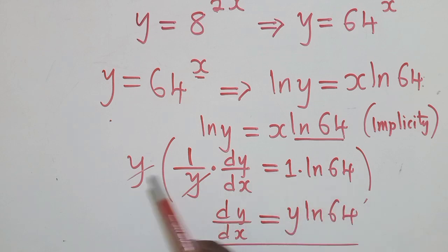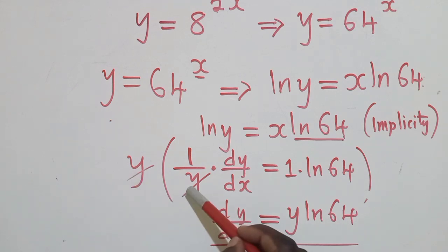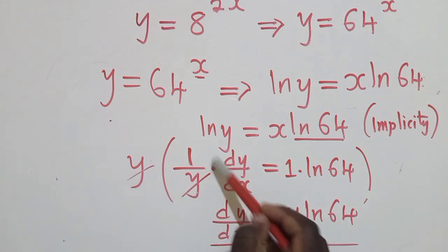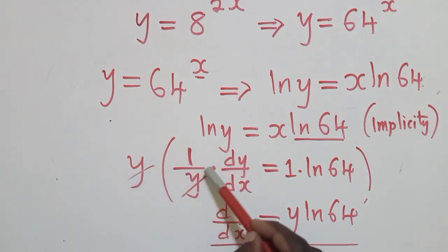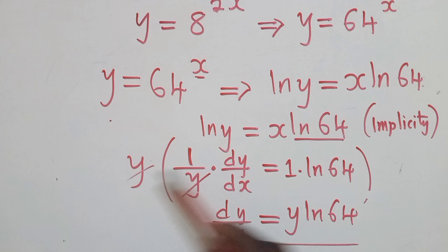So from this stage, you can divide throughout by what we have here. This side and this side. And when we divide by this, we shall get this stuff. So instead of wasting that time, you can just multiply by the reciprocal of what you have here, which is y. You multiply throughout by y. Y by this, y by this. And this is what we are getting.